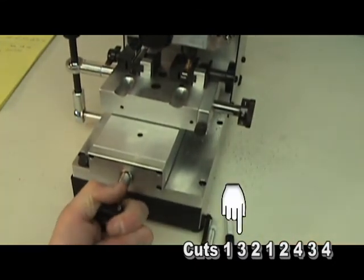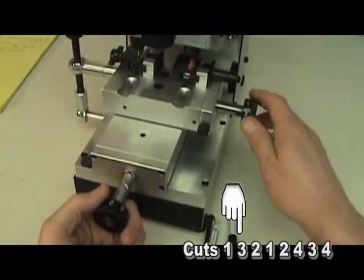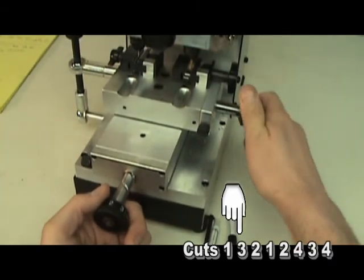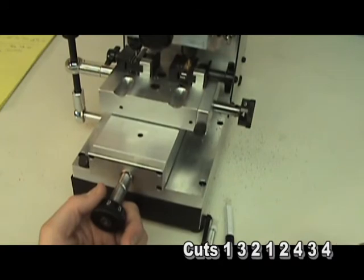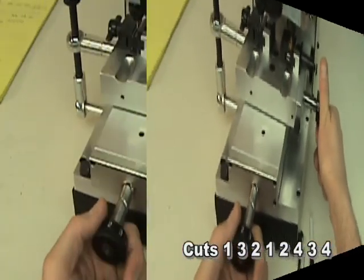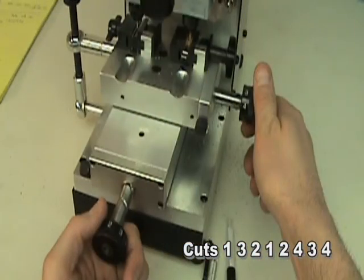Our next cut is a three depth, so we'll turn our space rod to a number two position, and our depth to a three depth. Be sure to grab the space rod firmly, as the cutter will try to pull the carriage away from you occasionally. Always remember, if your next cut is deeper, turn your space rod first. If your next cut is shallower, turn the depth rod first.